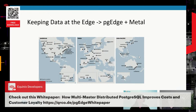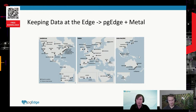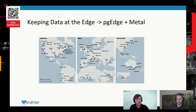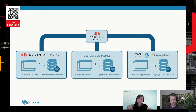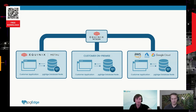One customer we've been working with has data in Australia — a real pain point because their users are accessing data from Australia, but their data was residing in the US. It's just a painful experience. With the network capabilities of Equinix, you can also be cross-cloud if you want, or even on-premise. You can mix and match the capabilities that best meet your business requirements.